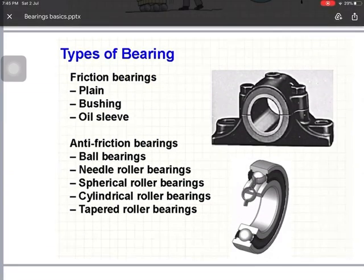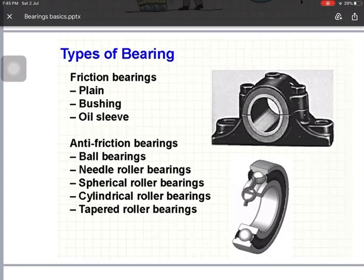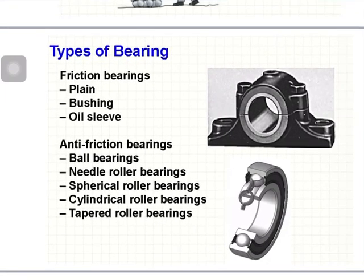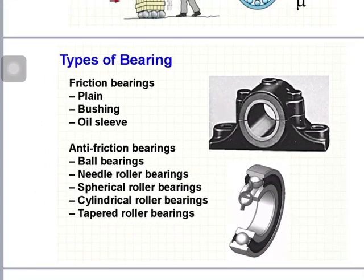Bearings are categorized into two types: friction bearings and anti-friction bearings. Friction bearings include plain bearings, bush bearings, and oil sleeve bearings. Anti-friction bearings have rolling elements — either balls or rollers — and include ball bearings, needle roller bearings, spherical roller bearings, cylindrical roller bearings, and taper roller bearings.